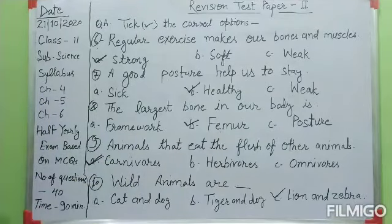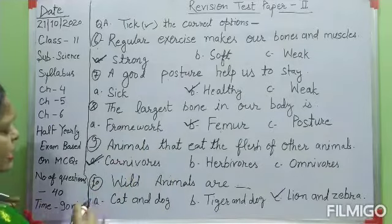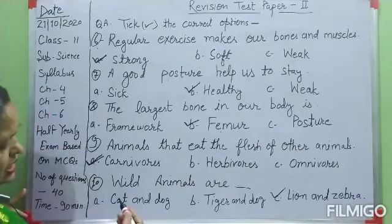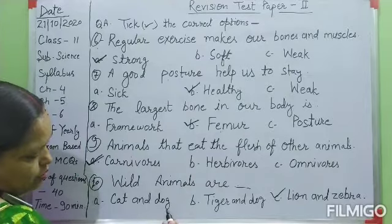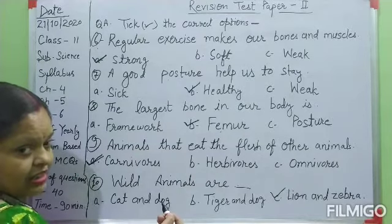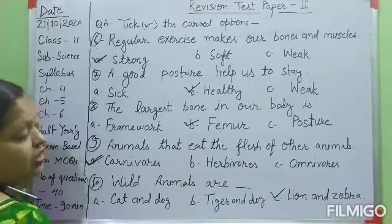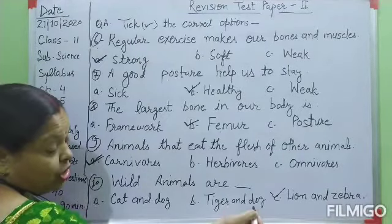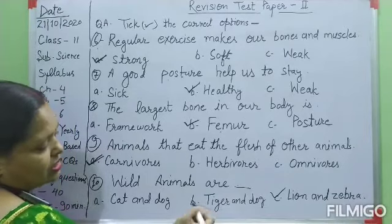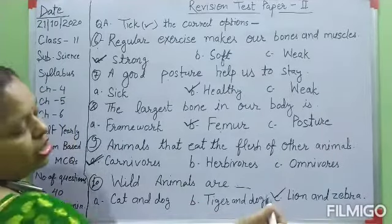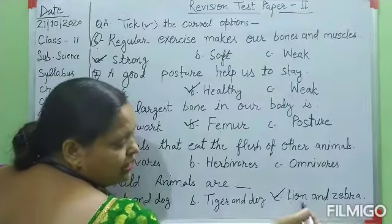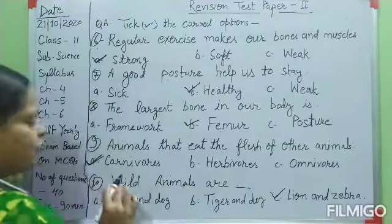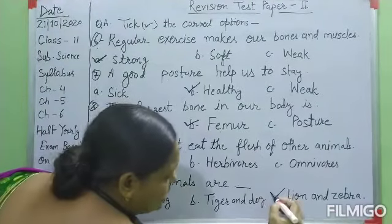The last question for today's test paper: wild animals are — A: cat and dog, B: tiger and dog, C: lion and zebra. Cat and dog are pet animals, so option A is wrong. Tiger is a wild animal but dog is a pet animal, so option B is wrong. Your correct option is C — lion and zebra. Both animals live in the jungle, so they are wild animals.